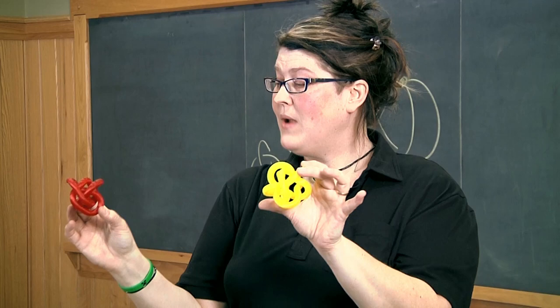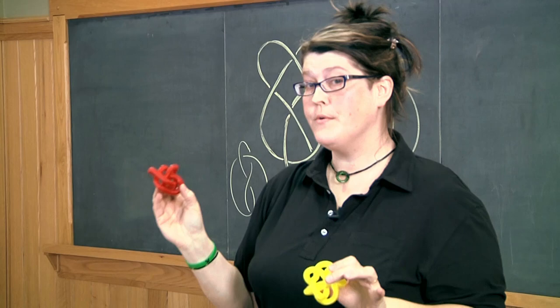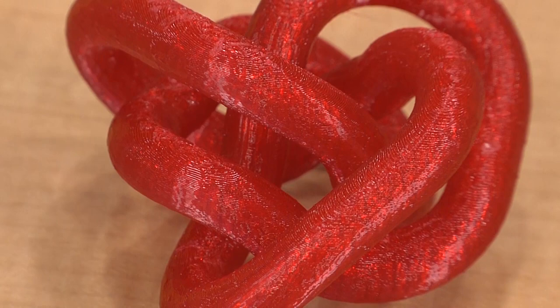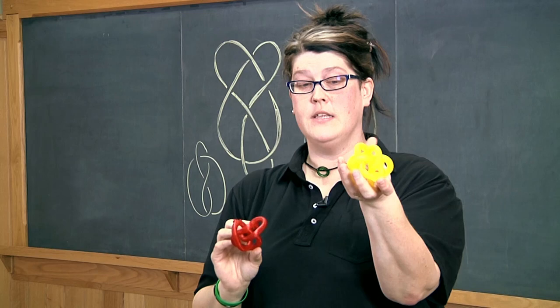This red knot has a very special property. No matter how I draw it on the board, I will never, ever be able to draw it so that the strands go over, under, over, under, over, under, like they do in all the pictures on the board here. You can't do it. You can draw it on the board, but it wouldn't be alternating. This is the first non-alternating knot. This is the knot right before it in the table. It is alternating.